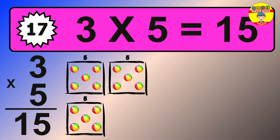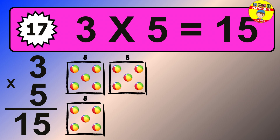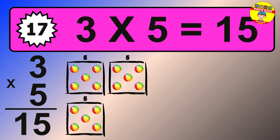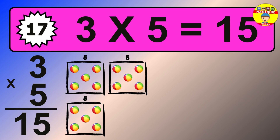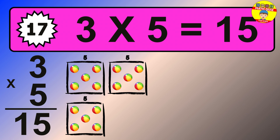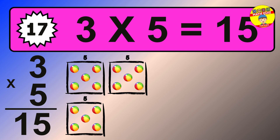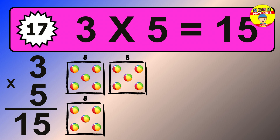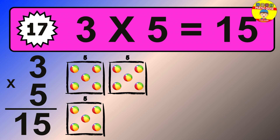Question 17. 3 times 5 equals what? The answer is 3 times 5 is 15. To calculate, we have 3 groups with 5 balls each one. So how many balls do we have? 15 balls.